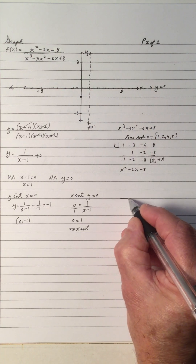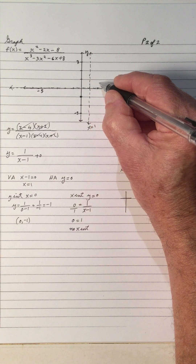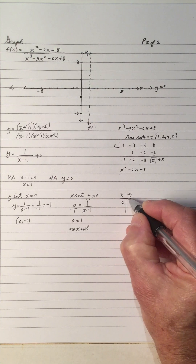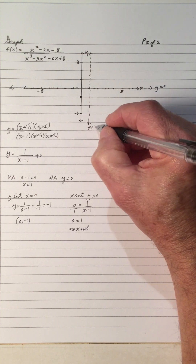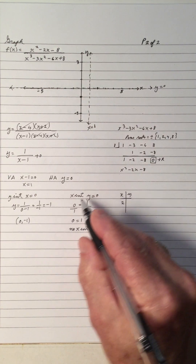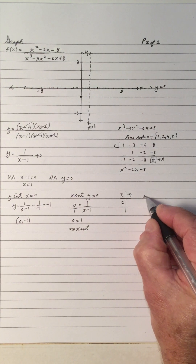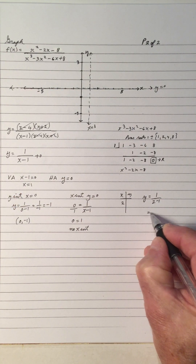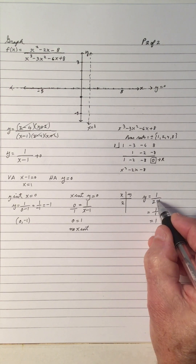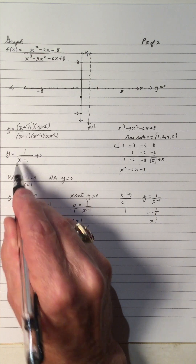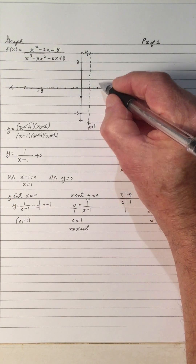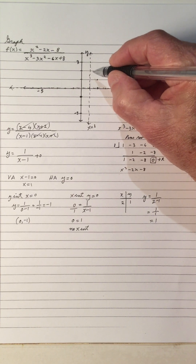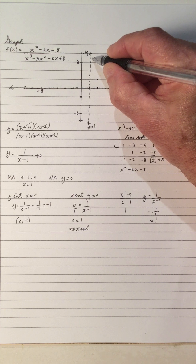What about another point — is the graph up here or down here on the right side? x equals 1 is the vertical asymptote, so let's look at where x is 2. Substituting x equals 2: y equals 1 over 2 minus 1, which is 1 over 1, which is 1. So when x is 2, y is 1 — that's the point (2, 1). So the graph goes towards the vertical asymptote; as x goes to infinity, y approaches 0, so it's coming down through here.